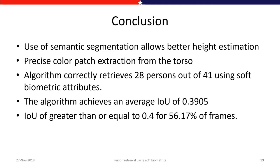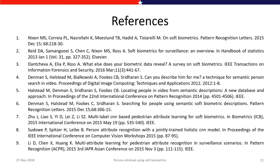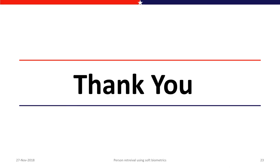In conclusion, the use of semantic segmentation allows better height estimation to filter persons at the initial stage, and enables extraction of precise color patches from the torso for correct color classification. The algorithm achieves an IoU of 0.3905, with 56.70 percent of frames having IoU greater than 0.4. We acknowledge the Board of Research in Nuclear Science, India for the grant, Queensland University of Technology for creating the dataset, and NVIDIA for providing the GPU for training and testing. Thank you.